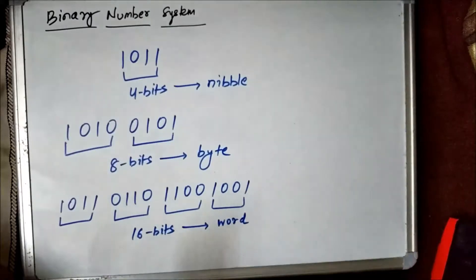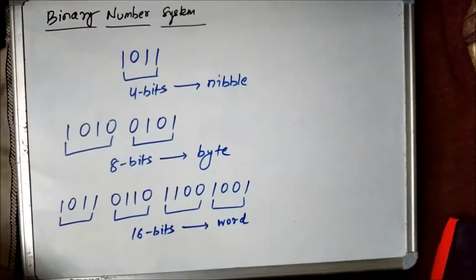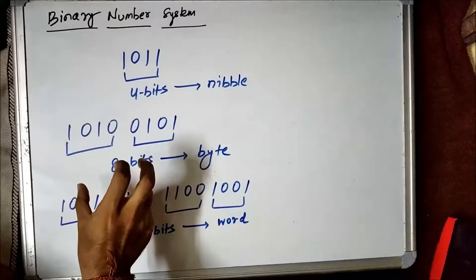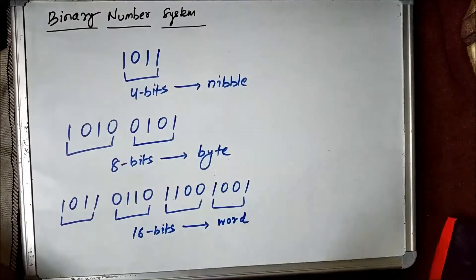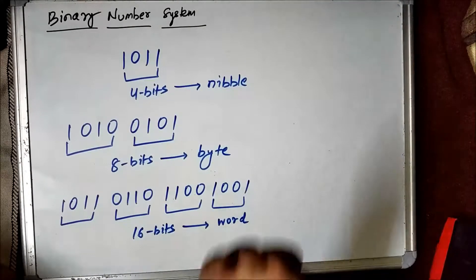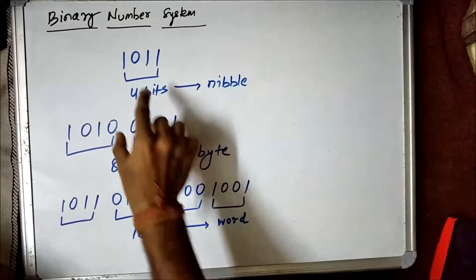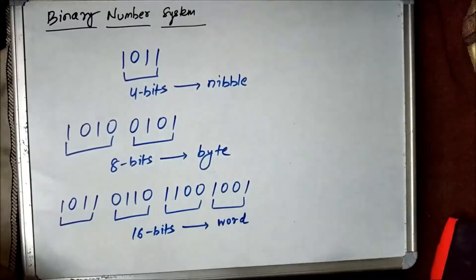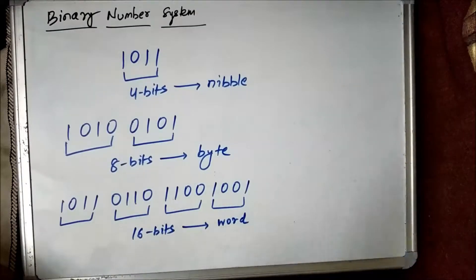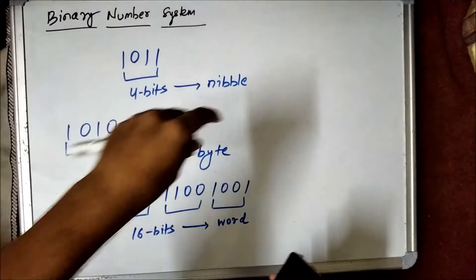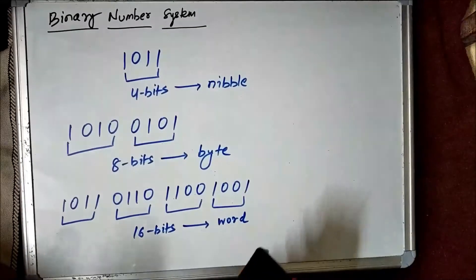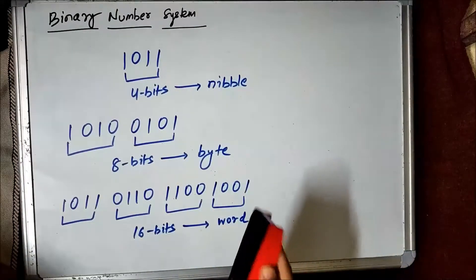Always remember these terms. If anywhere it is mentioned 'byte,' it should immediately remind you it is a group of 8 bits. If it says 'word,' it is 16 bits. If it says 'nibble,' it means 4 bits. You should remember these terms when it comes to the binary number system or digital electronics, because they will be used frequently.